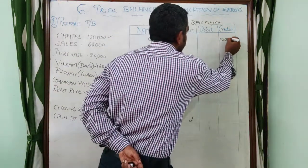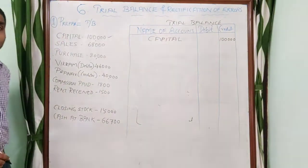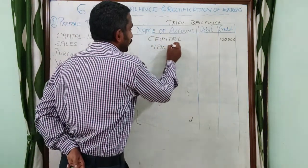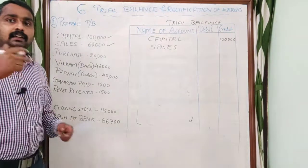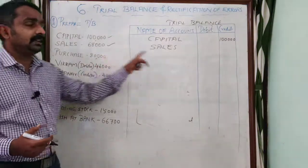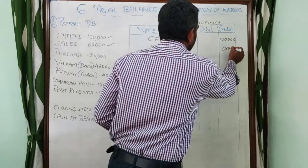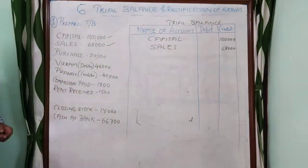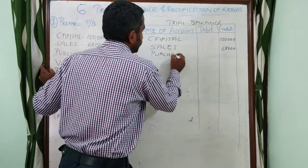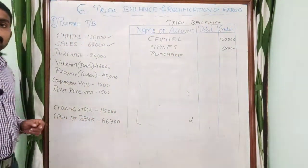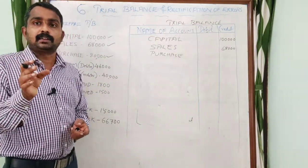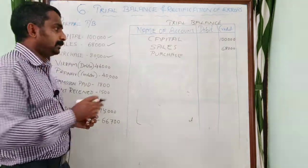Now let us start filling in the trial balance. Capital is 1 lakh — capital is a liability-type account, so its normal balance is credit. We place 1 lakh on the credit side. Next is Sales — sales is an income account, so the normal balance is credit. We place the sales balance on the credit side.